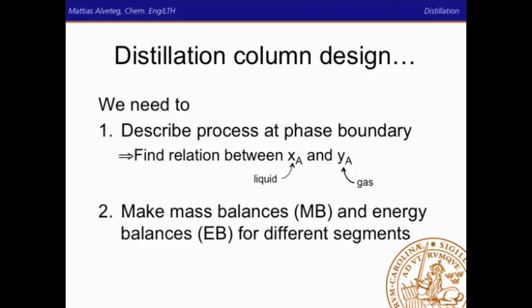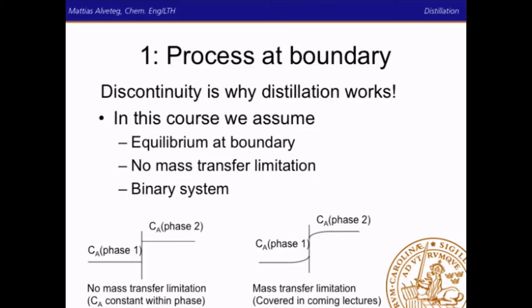At the phase boundary we have discontinuity, and that is the reason why distillation works: the concentration in one phase differs from the concentration in the other phase. In this course we will assume equilibrium at the boundary, no mass transfer limitation, and only a binary system with two components. If we have no mass transfer limitation, the concentration is constant within the phase and only changes when going from one phase to the other. If we have mass transfer limitation, the concentration changes gradually as we approach the phase boundary, and we will talk more about that in coming lectures.